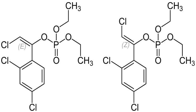Acetylcholine is a neurotransmitter in the nervous system. It targets muscarinic and nicotinic receptors and receptors in the central nervous system. These receptors are used to pass on an action potential across the synaptic cleft between neurons. Inhibition of acetylcholinesterase enzymes results in the accumulation of acetylcholine at its receptors, leading to continuous or excessive stimulation of neurons. The most likely cause of death in chlorfenvinphos poisoning is respiratory failure due to paralysis and bronchoconstriction.